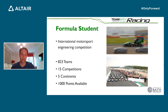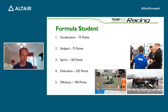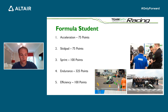Every competition has 1000 points available, split into a variety of events. The dynamic events consist of acceleration — a straight line acceleration event — skid pad, which is a figure of eight where the car's steady state handling ability is pushed to the limits, then sprint, a single lap of a short twisty track. Then there's endurance, the standout event: a 20 kilometre race on a track similar to the sprint course, pushing the car's performance, the driver's endurance, and the car's reliability to the limits. Finally, efficiency, where the amount of fuel or electric energy used during the endurance event is judged and ranked.